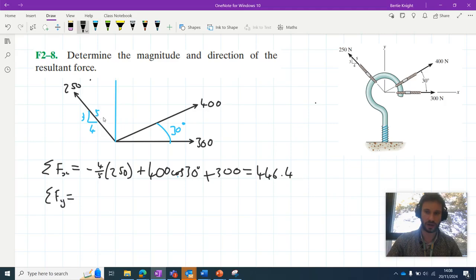Let's move on then and add together the Y components. So in the case of this 250 Newton force here, it'll be three-fifths of 250. We can add the vertical component of this 400 Newton force, which will be 400 sin 30. And that's all we have acting vertically.